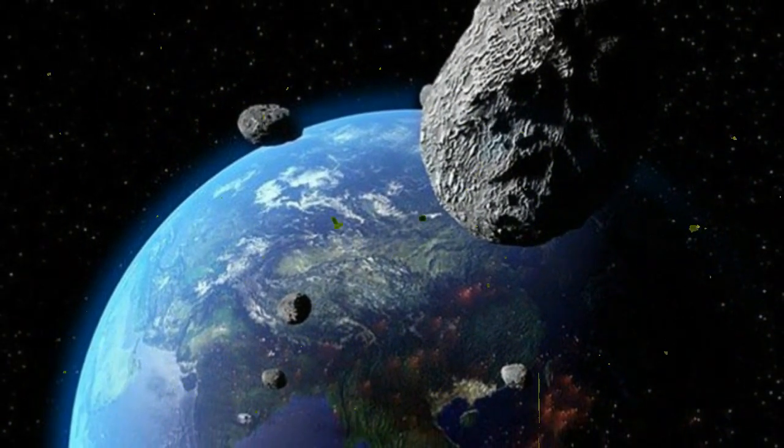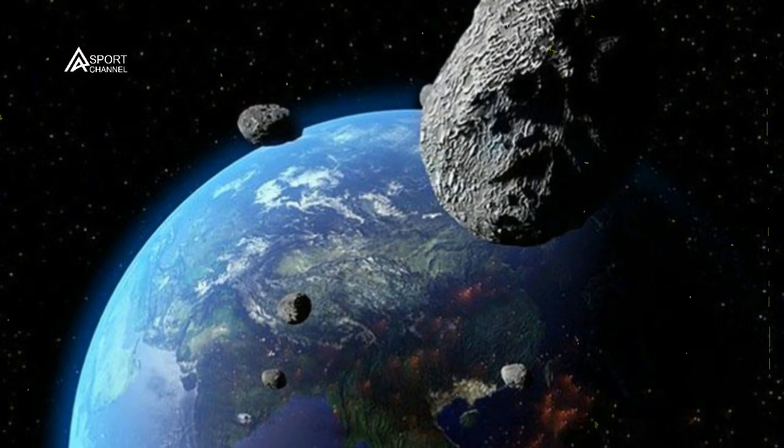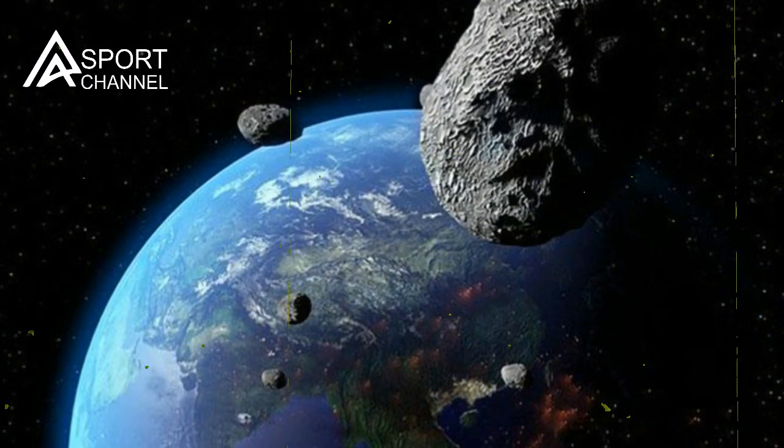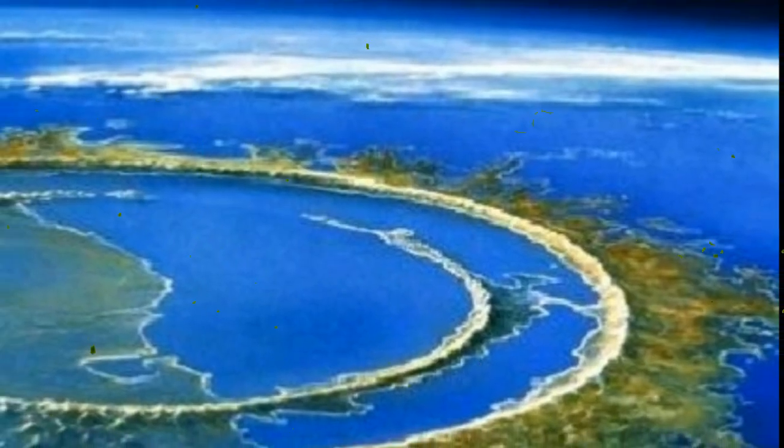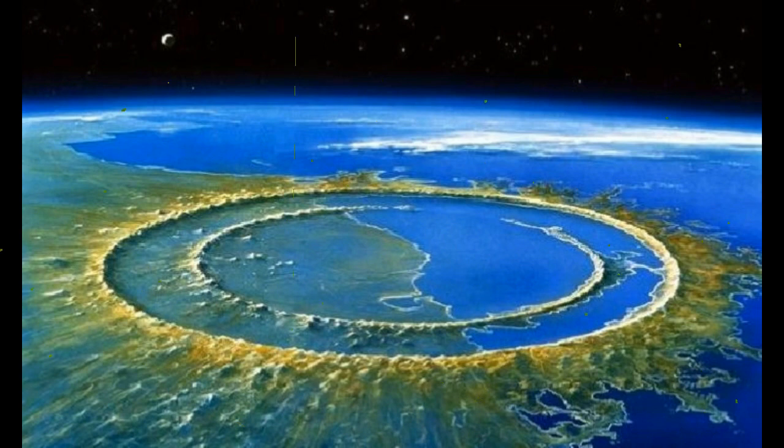Scientists will send the DART spacecraft hurtling into the Near-Earth binary asteroid Didymos, which is shaped like a spinning top and has two bodies. The bigger one measures about 2,600 feet (780 meters) in diameter, and its smaller moonlet measures around 520 feet (160 meters) in diameter.